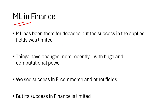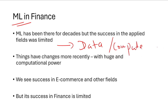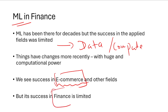The initial success was limited simply because there wasn't much data, and computational power was much less a couple of decades ago. Things have changed — there's been a huge improvement in hardware and the amount of data available today is far greater than in the 1970s and 80s. Yet despite huge success in e-commerce and other fields, machine learning is still not a huge success in finance, although there are many use cases where it is being used.